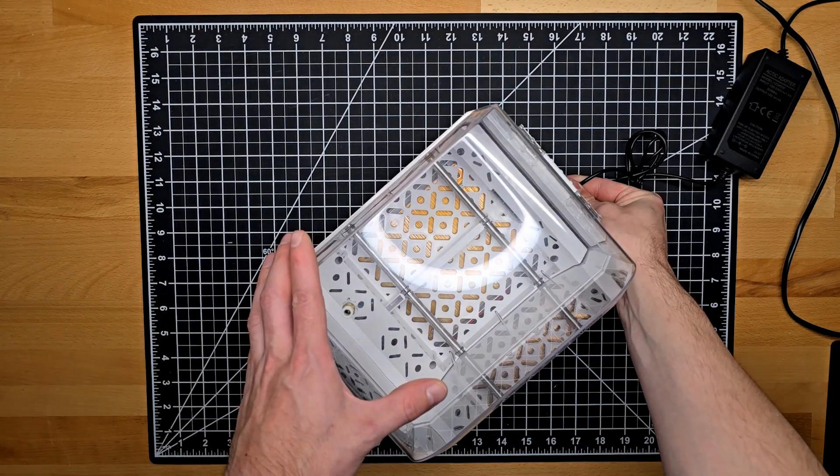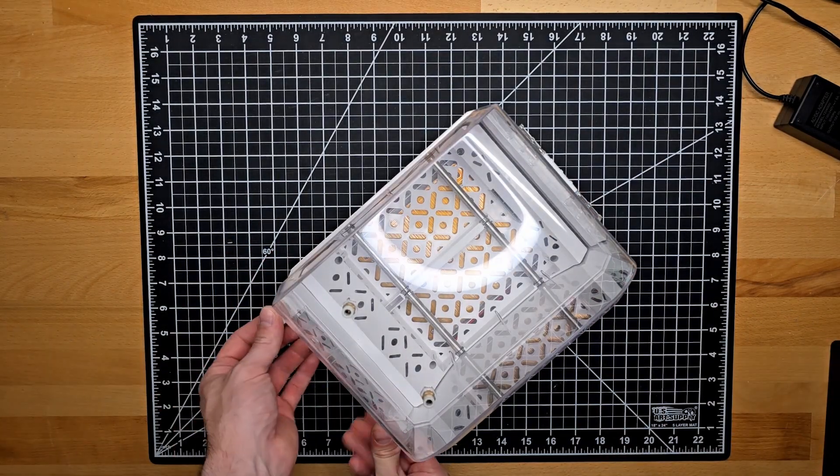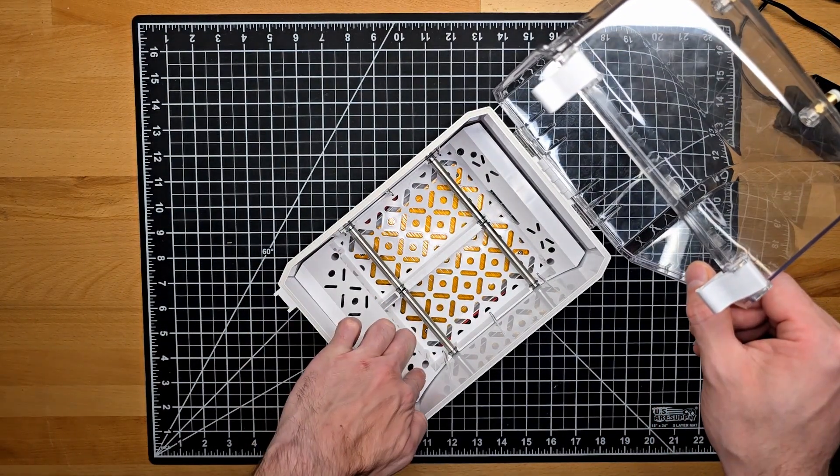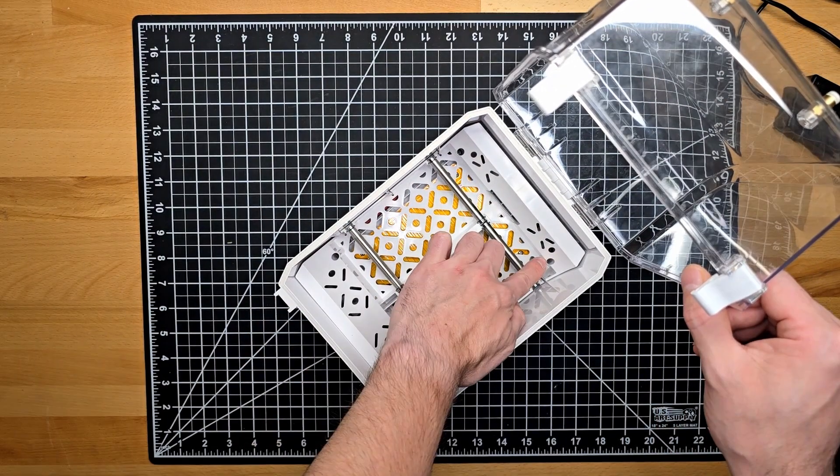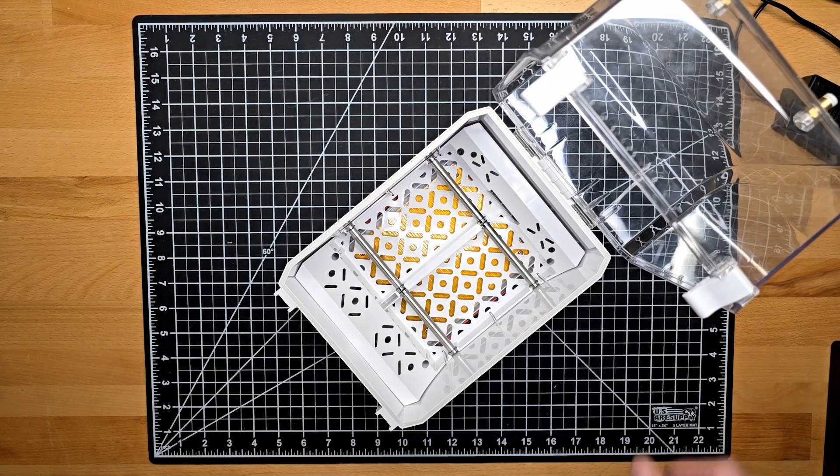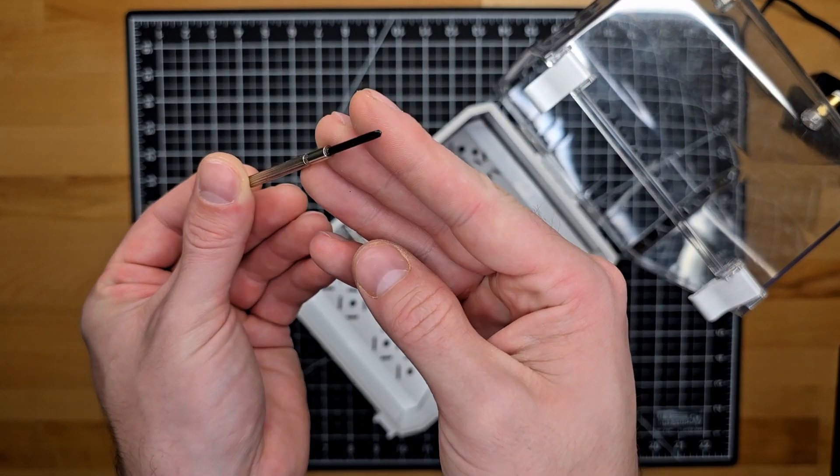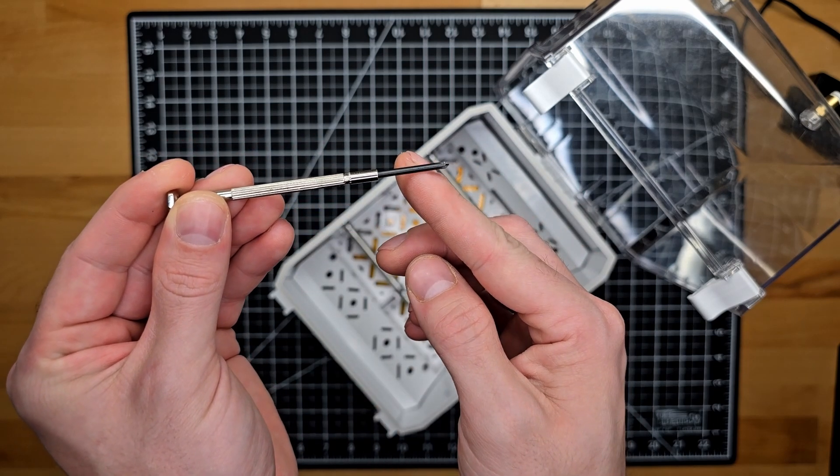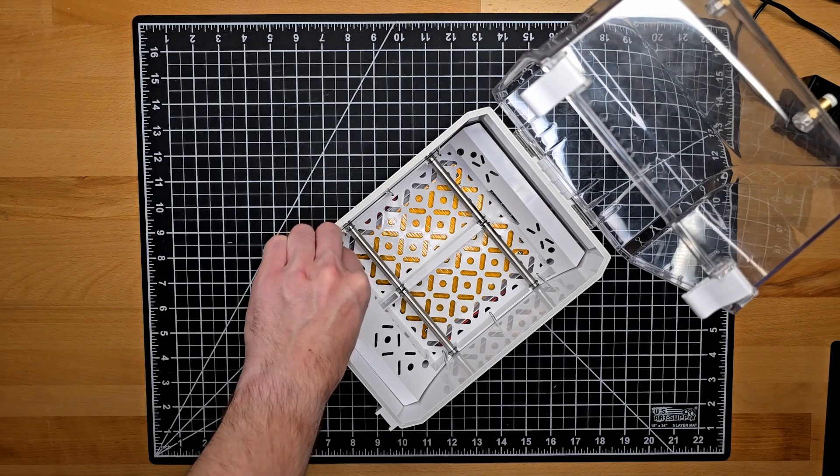So today we're going to be covering the replacement of the fan with what I've got on hand. To start we're going to remove the base plate from the bottom of the chamber. They are secured by these four screws in the corners, and to do so you're going to need a thin shaft Phillips screwdriver commonly found in computer repair kits so that we can get down the narrow channel and access each of the four screws.